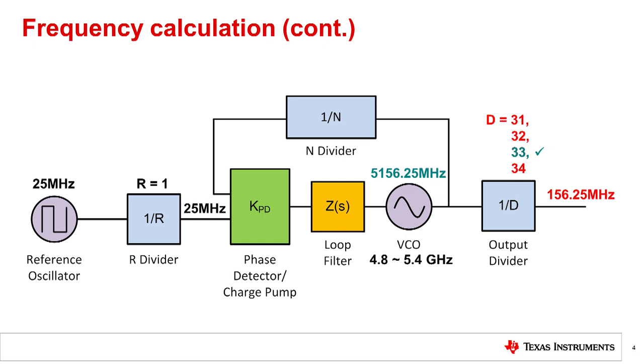The fractional n divider consists of three parts: an integer n divider, a numerator, and a denominator. The fractional divider value is simply n plus the numerator over the denominator. In this case, n is equal to 206, the numerator is 1, and the denominator is 4.